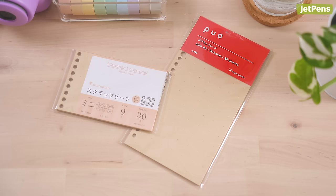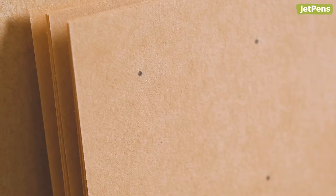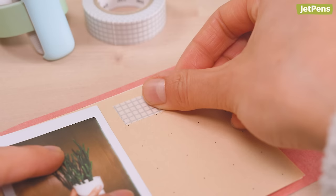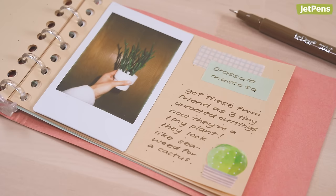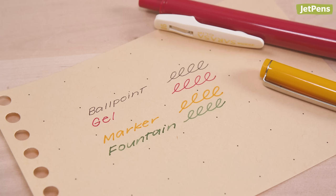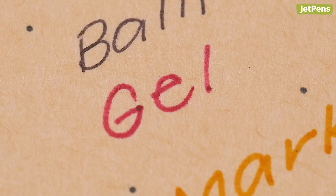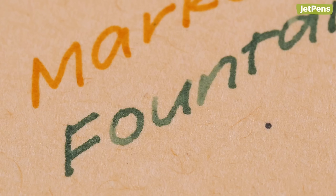Maruman scrap paper is a light brown paper made from bamboo fibers. It's printed with a large 15-millimeter dot grid, which helps you keep your collages neat and straight. The paper performs surprisingly well with all kinds of writing instruments, including inky gel pens and fountain pens.